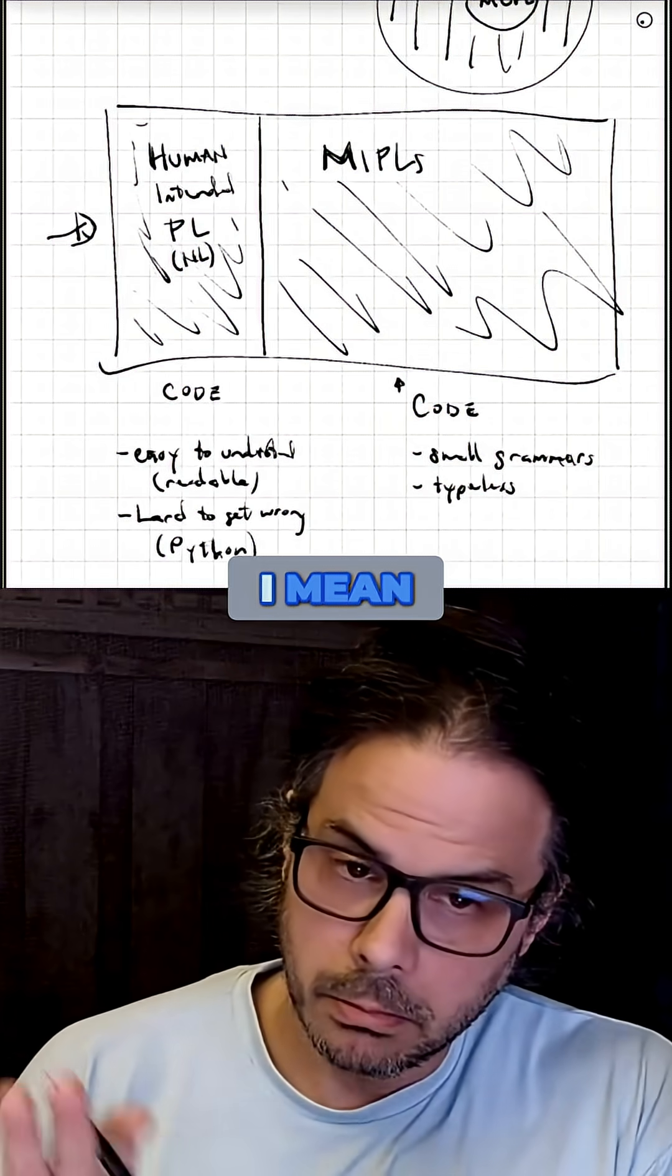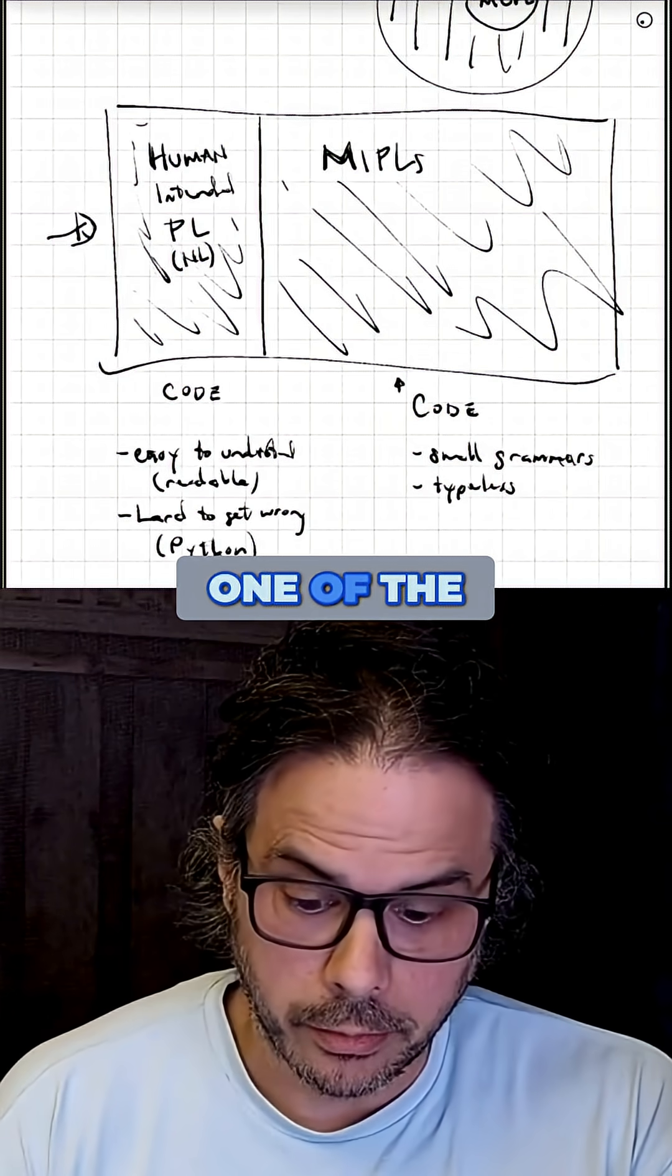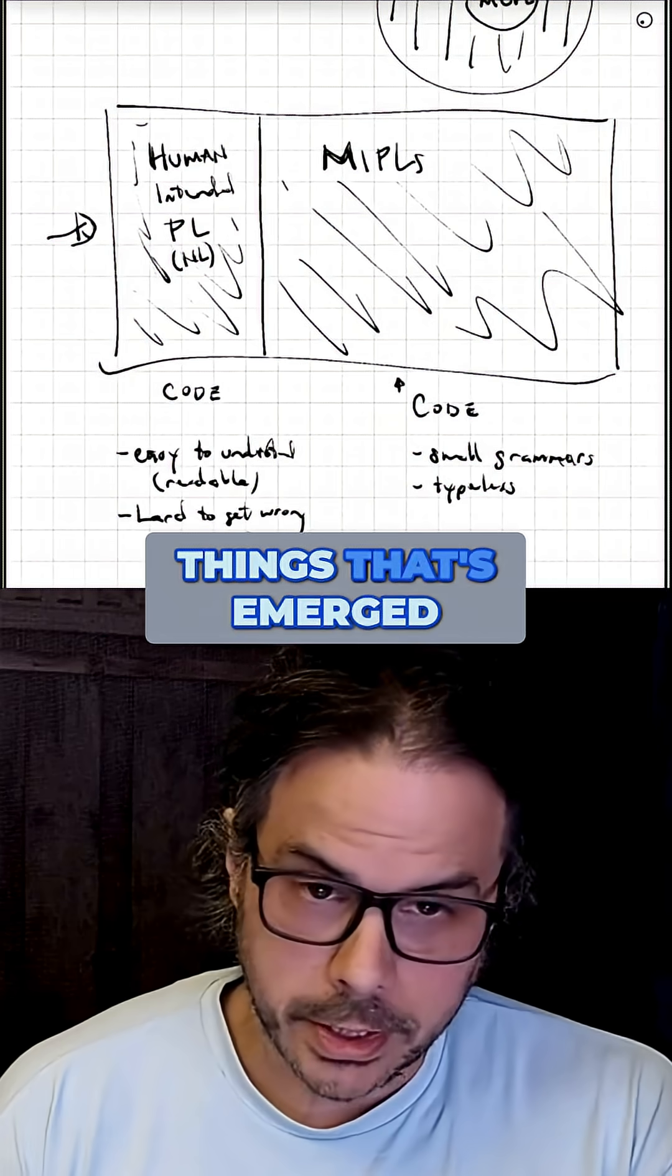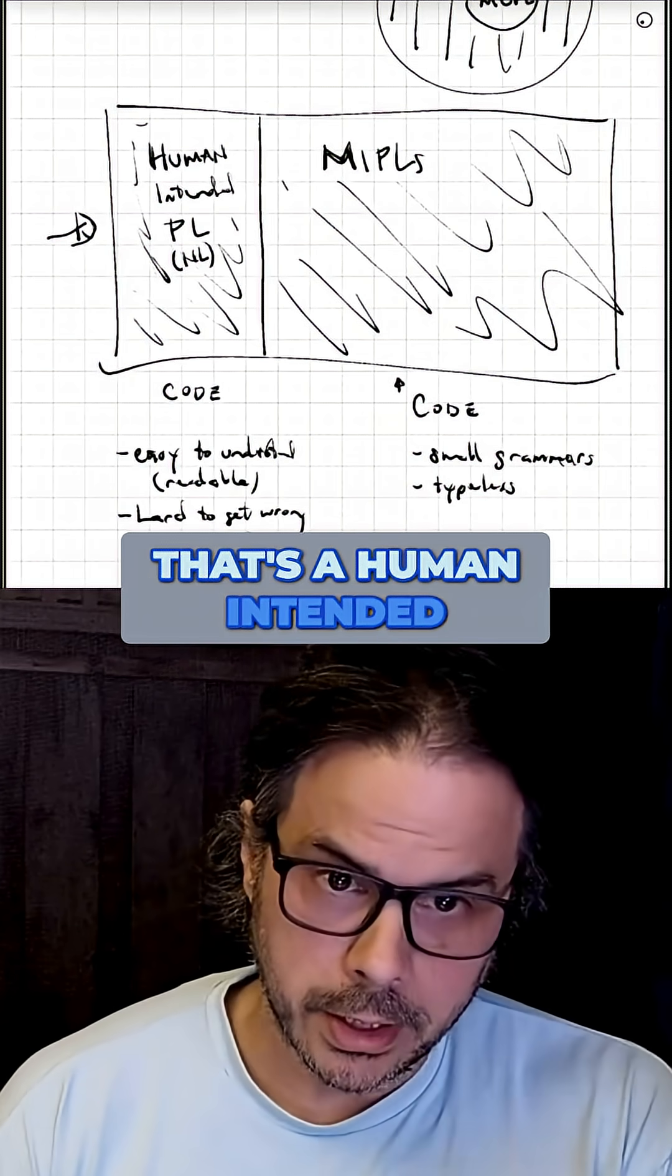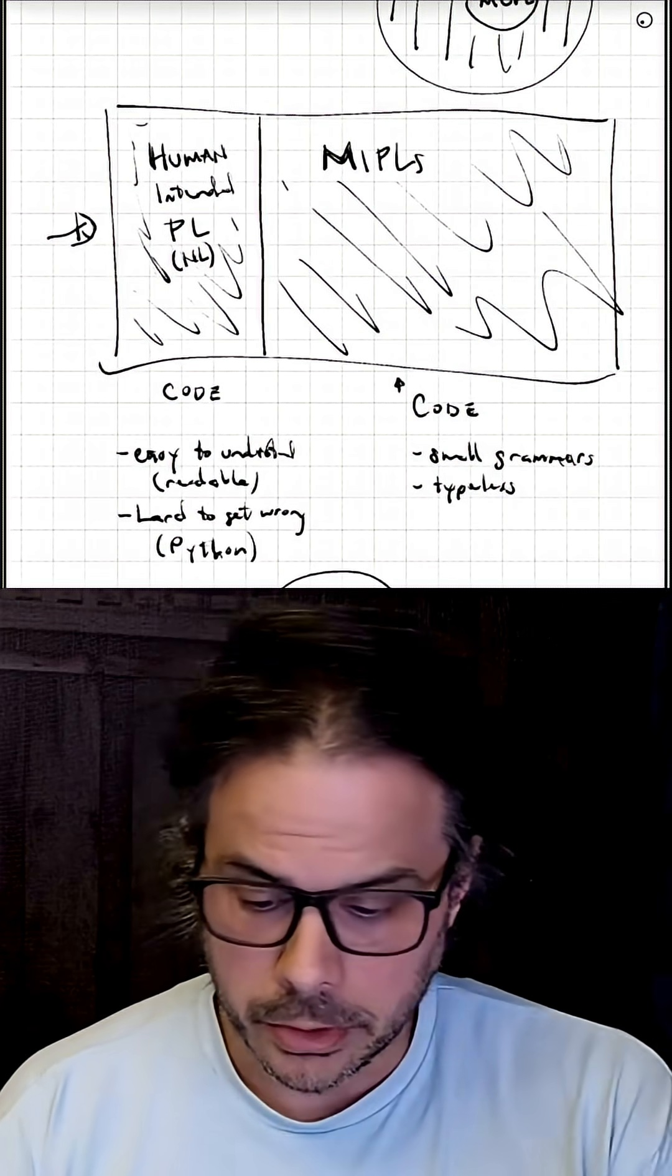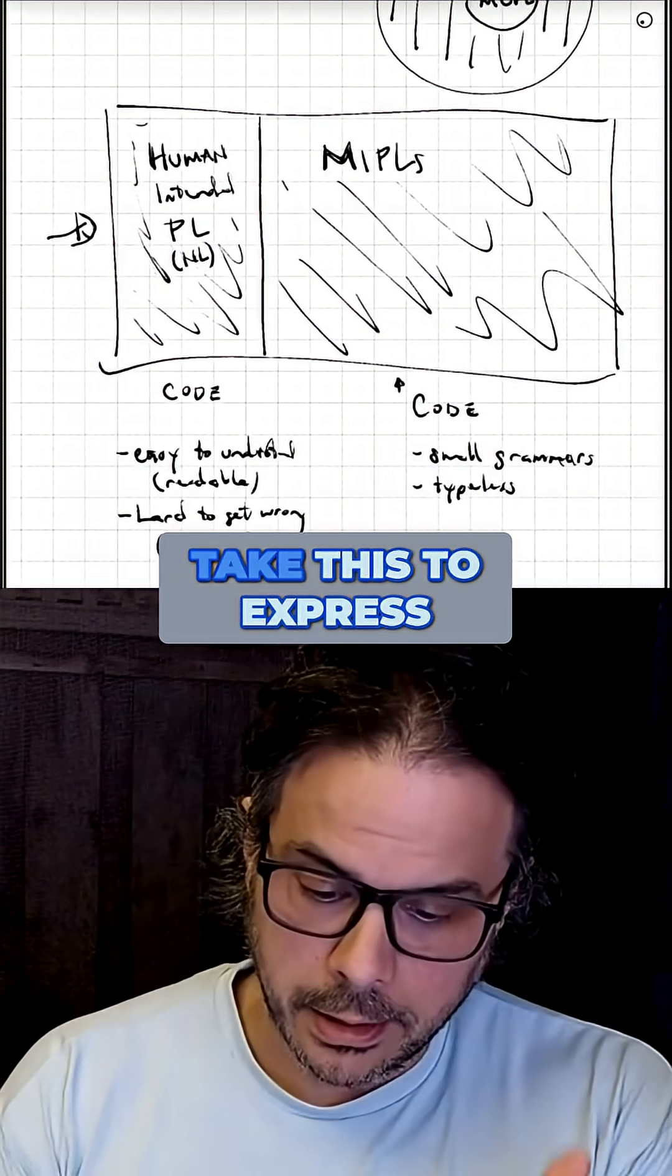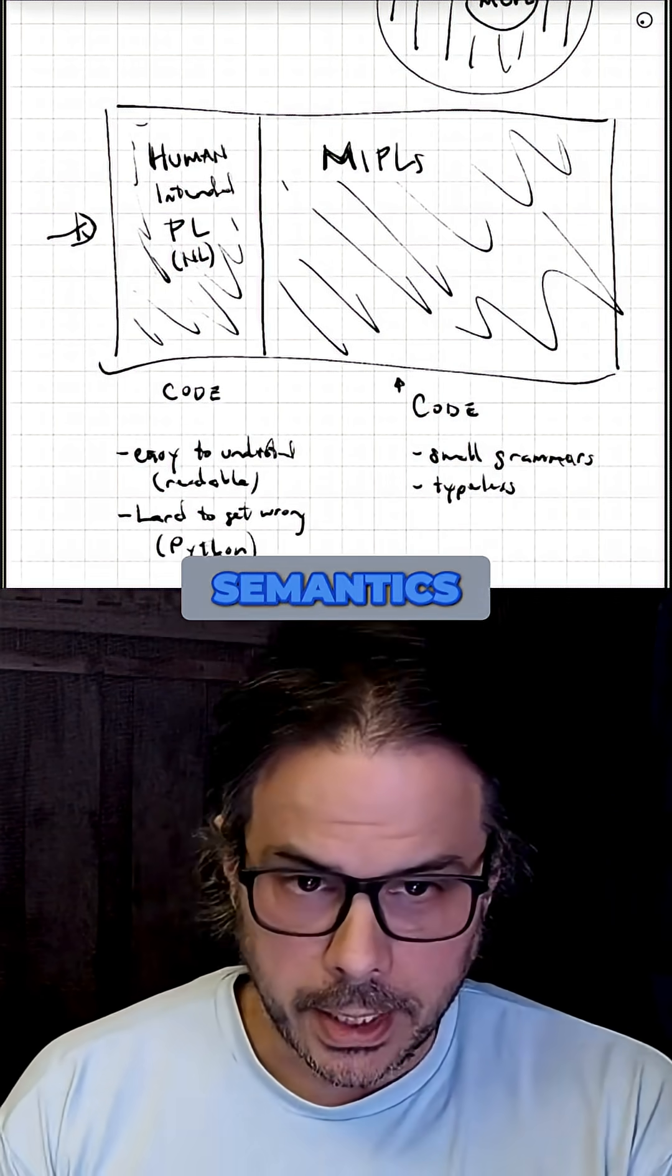I mean, not exactly, but that's kind of one of the things that's emerged. There are problems with this, but natural language is a human-intended programming language that we can use to express semantics.